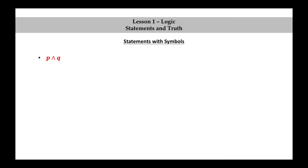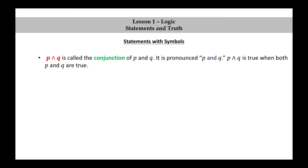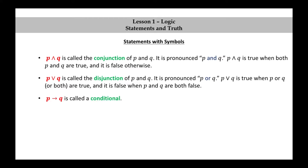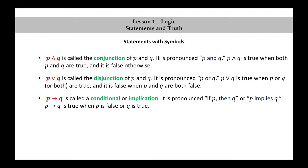P wedge Q is called the conjunction of P and Q. It is pronounced P and Q. P and Q is true when both P and Q are true, and it is false otherwise. P V Q is called the disjunction of P and Q. It is pronounced P or Q. P or Q is true when P or Q or both are true, and it is false when P and Q are both false. P right arrow Q is called a conditional or implication. It is pronounced if P then Q, or P implies Q. P implies Q is true when P is false or Q is true, or both.